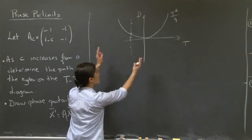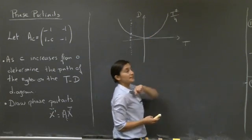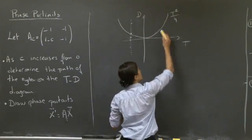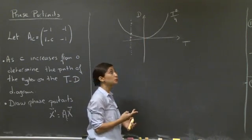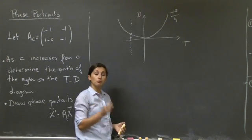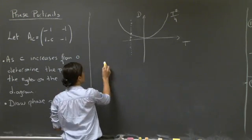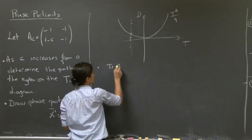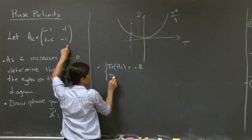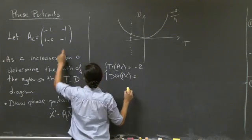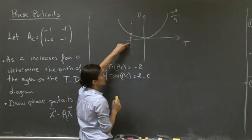Welcome back. I already prepared the trace-determinant diagram. As a reminder, the parabola determines whether we're going to have repeated eigenvalues or not. Above this parabola we have two complex conjugate eigenvalues; below it we have real eigenvalues. In our case, matrix A has a trace equal to minus 1 minus 1, so it's minus 2, and a determinant equal to 2 minus C. So we are along this dotted line where the trace equals minus 2.